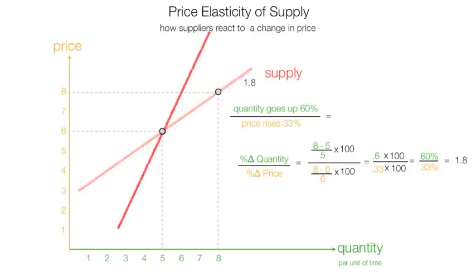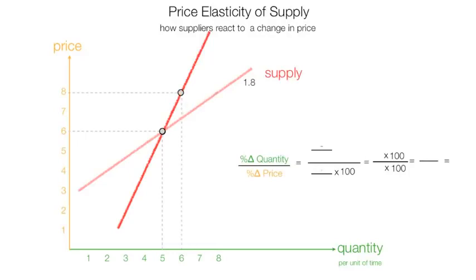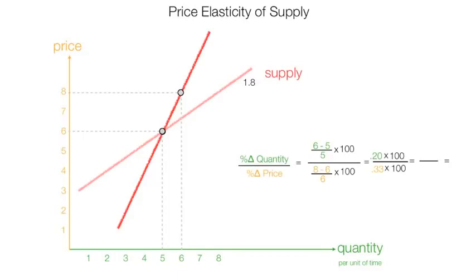Now I am going to make supply more inelastic and recalculate price elasticity of supply. The price increase is exactly the same, from 6 to 8. So the formula becomes 6, which is the new quantity, minus 5, which is the initial quantity, divided by 5. The percentage change in price is 8 minus 6, which is the initial price, divided by 6, the initial price. This equates to 0.20 times 100, divided by 0.33 times 100, which equates to 20% divided by 33%, which is equal to 0.6. So price elasticity of supply decreased from 1.8 to 0.6.